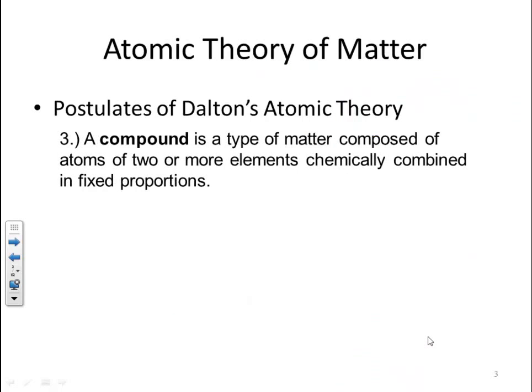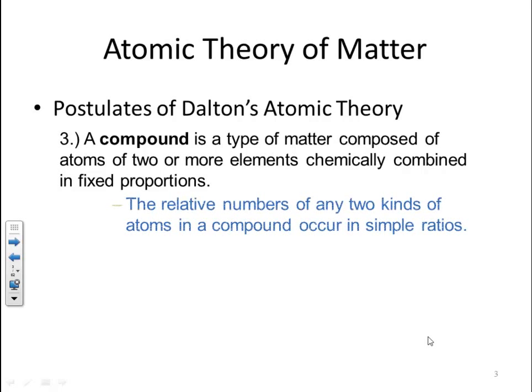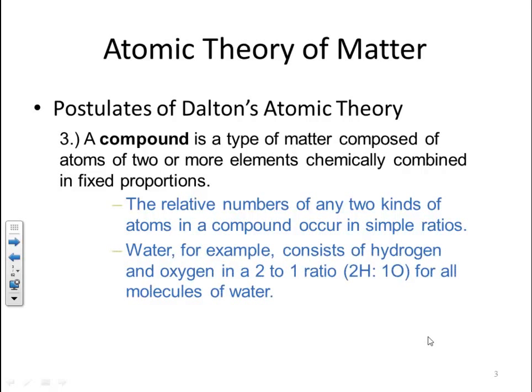Third postulate: a compound is a type of matter composed of atoms of two or more elements chemically combined in a fixed proportion. The relative numbers of any two kinds of atoms in a compound occur in simple ratios. For example, water consists of hydrogen and oxygen in a two-to-one ratio — there are two hydrogens for every one oxygen for all molecules of water.